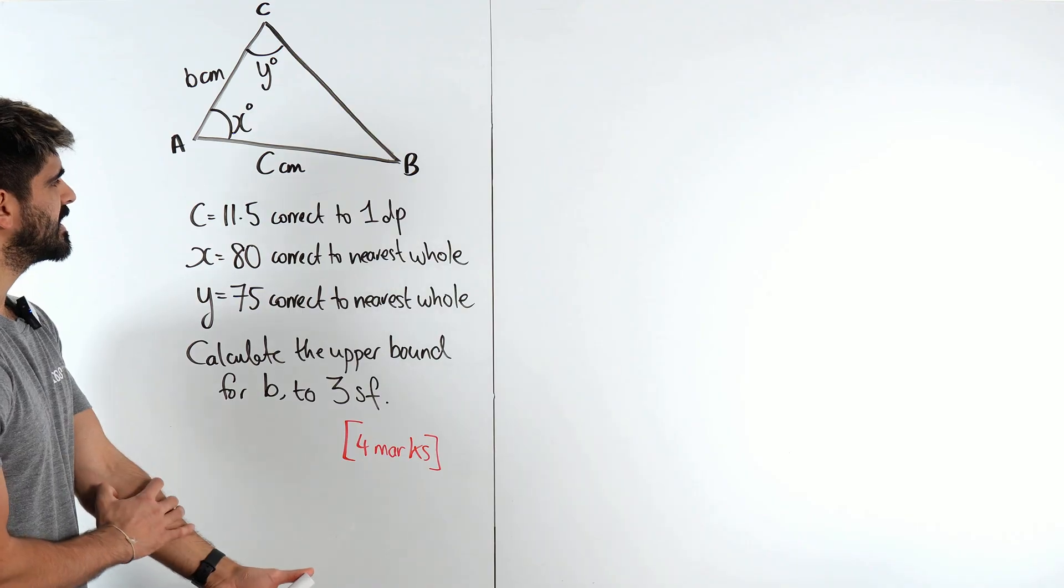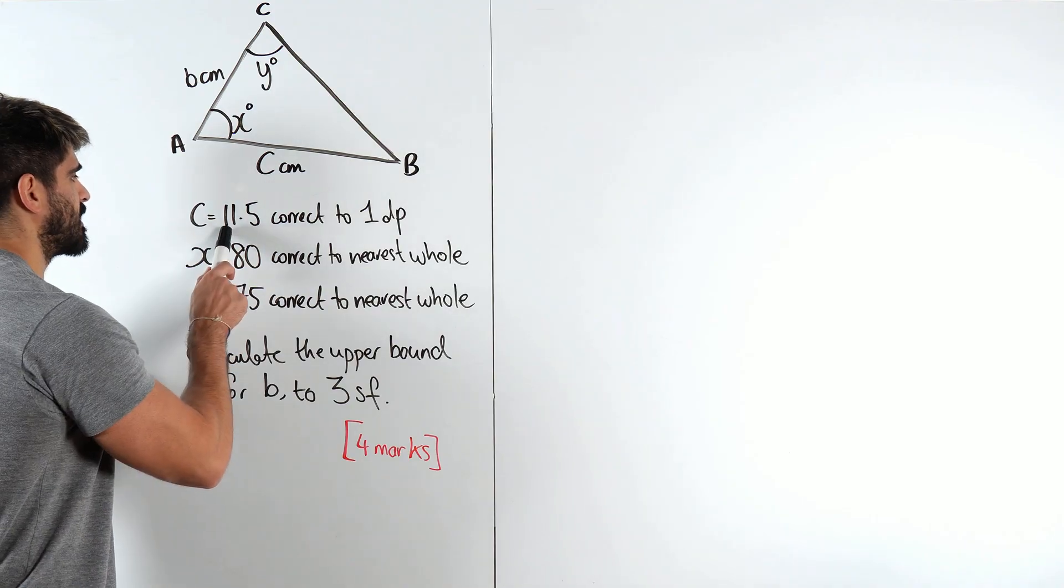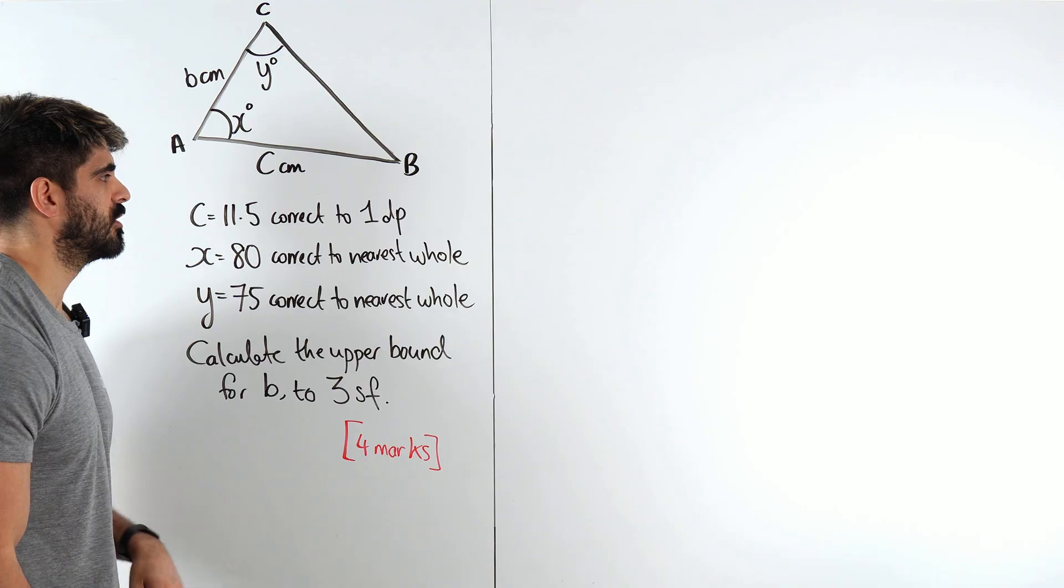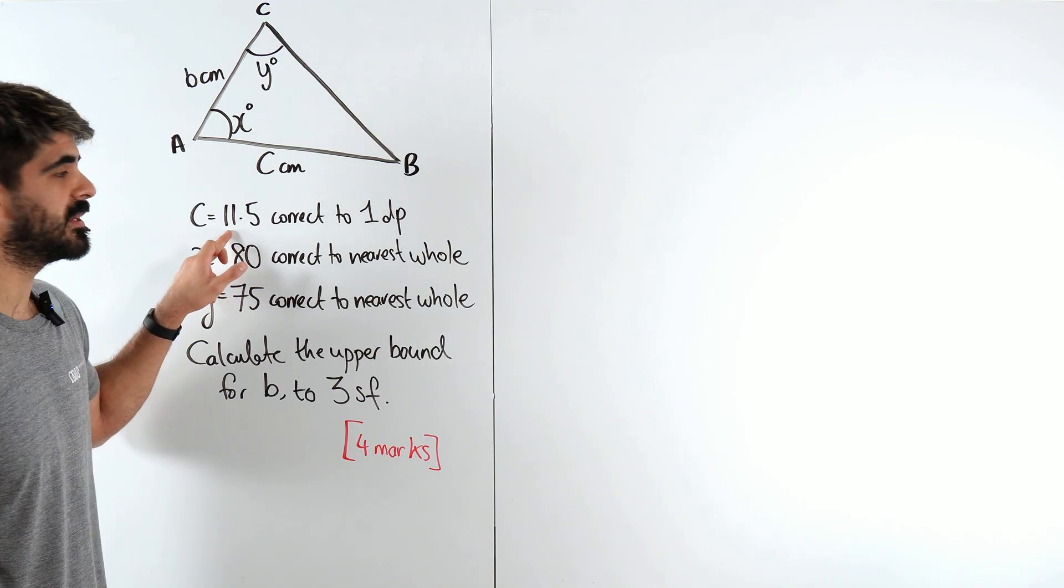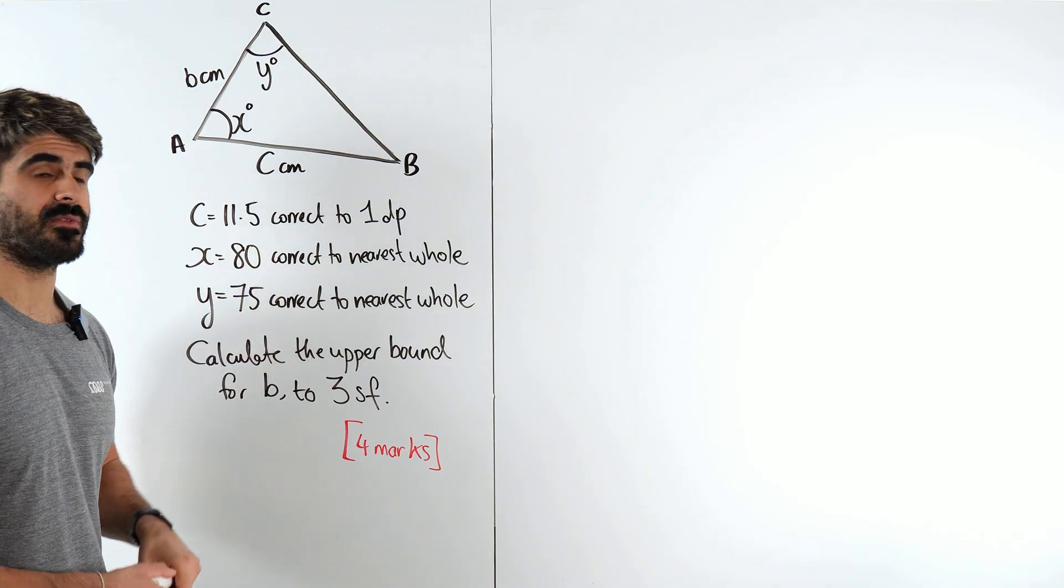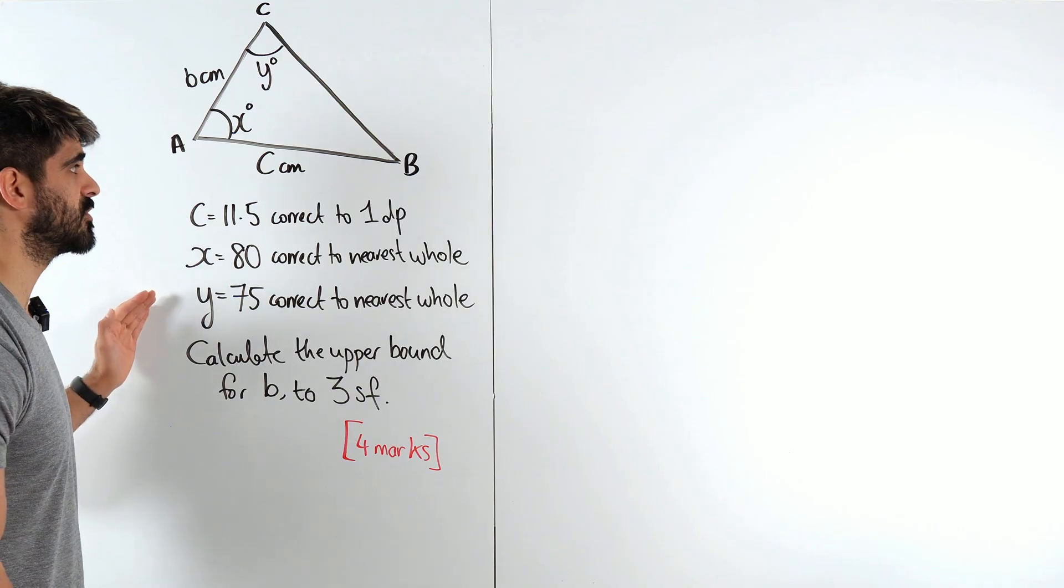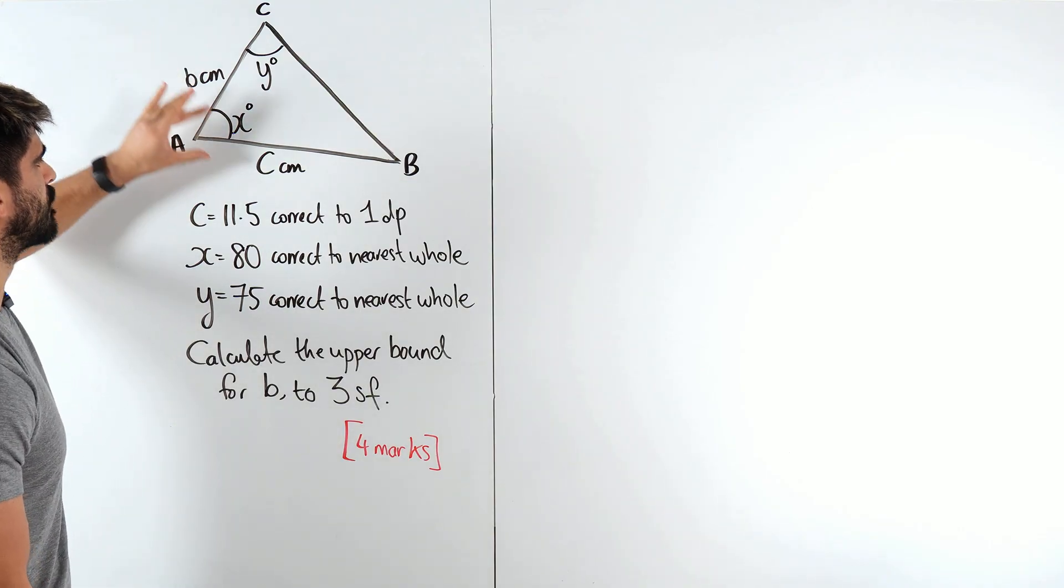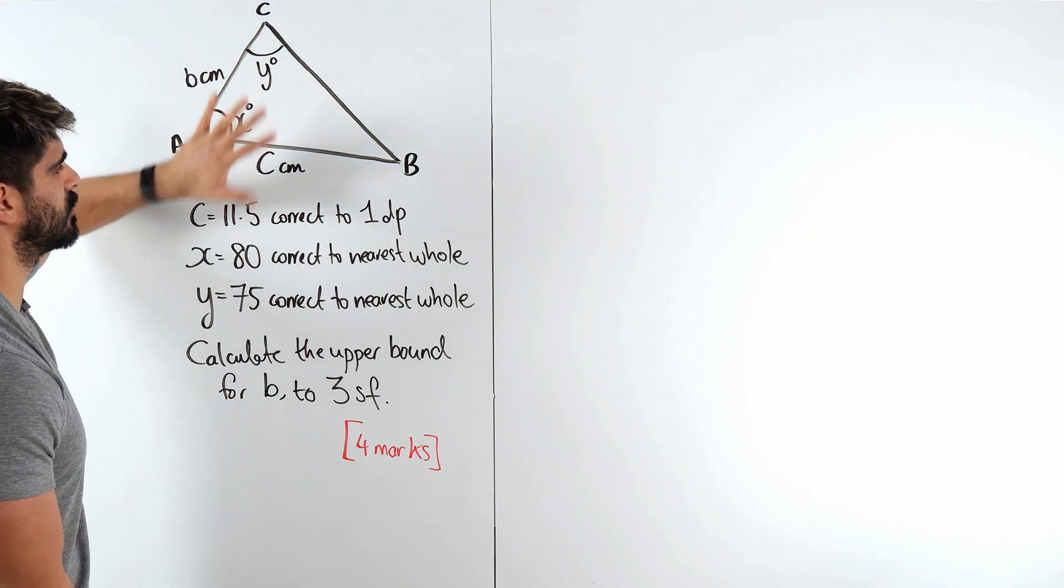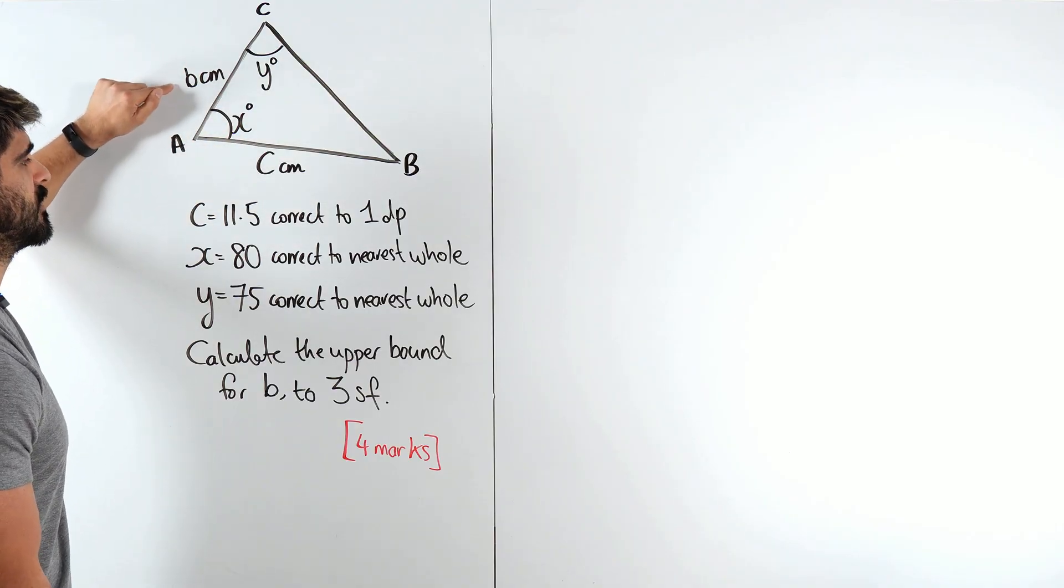Calculate the biggest number this value could be based on the error of these values. Because what does it mean that c is 11.5 correct to 1 decimal place? It means that c has been rounded. It could have been 11.49 or 11.48, but whoever did this calculation just rounded all the values. So all of these have errors, and obviously these errors will create a range of values. When you're taking that all into account, what is the biggest possible value this could be?